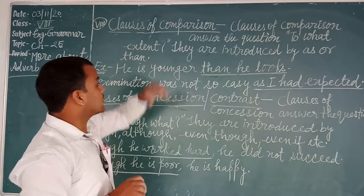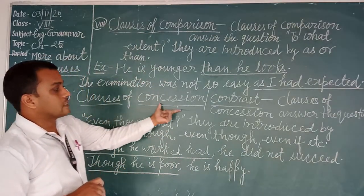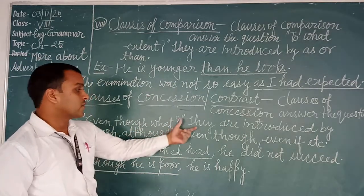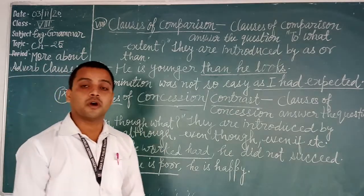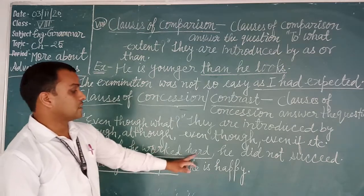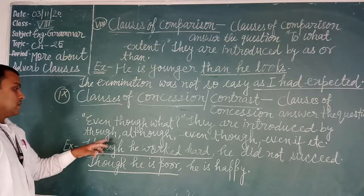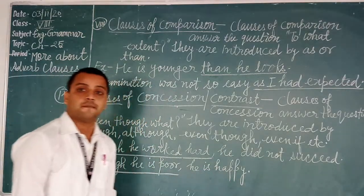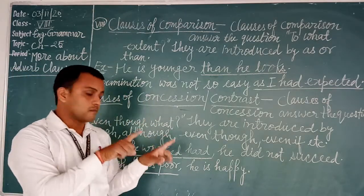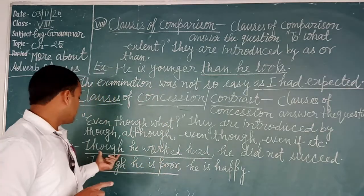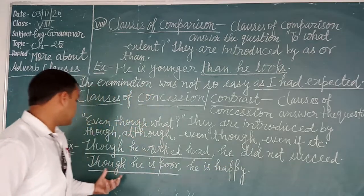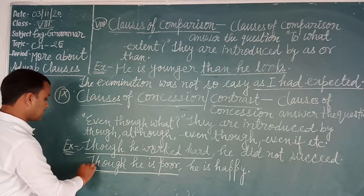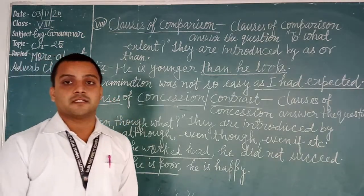Now the last kind: clauses of concession or contrast. A clause of concession answers the question 'even though.' They are introduced by conjunctions like 'though,' 'although,' or 'even though.' For example: 'Though he worked hard, he did not succeed.' Another example: 'Though he is poor, he is happy.' The conjunction 'though' shows the contrast between both sentences.